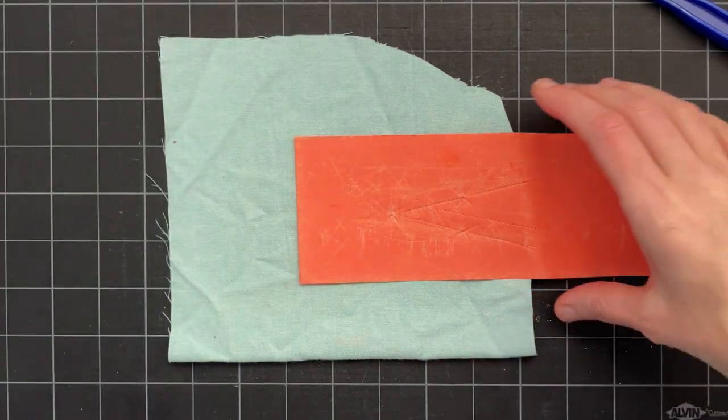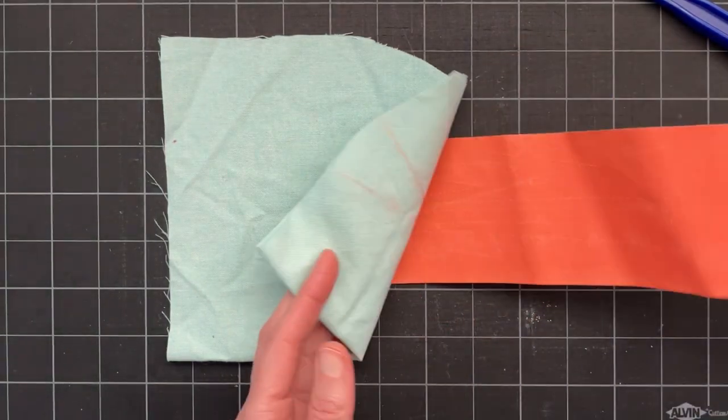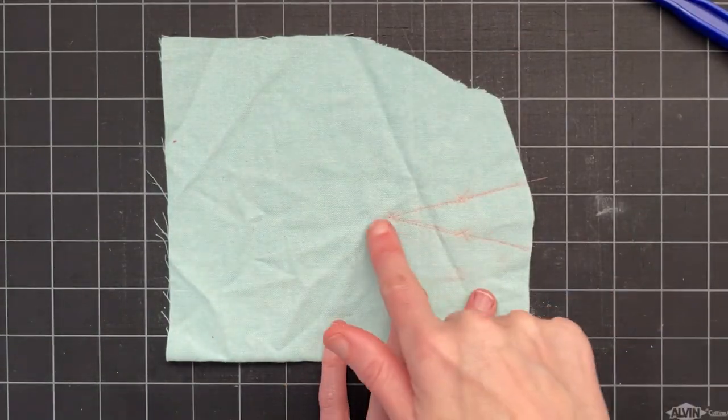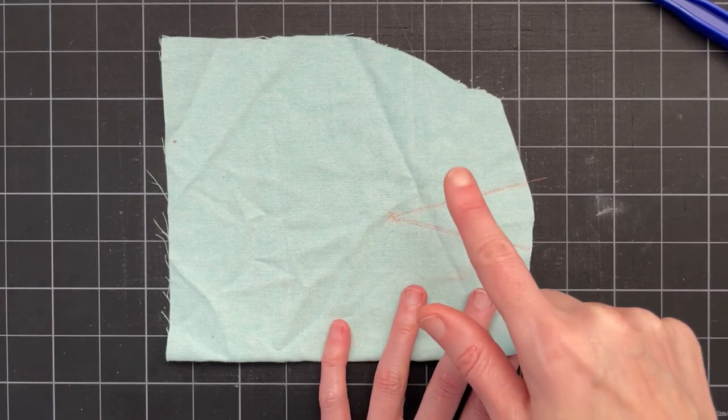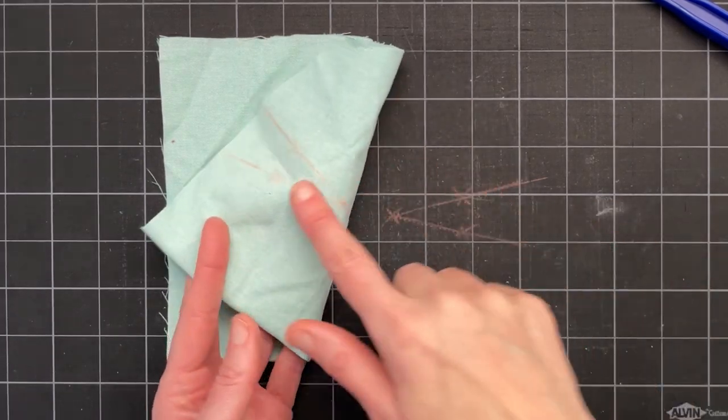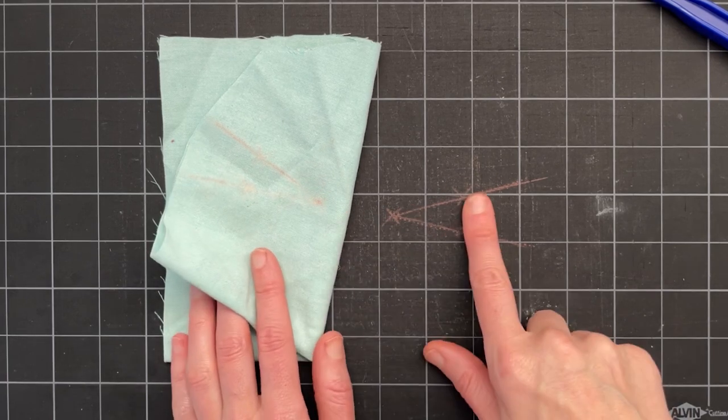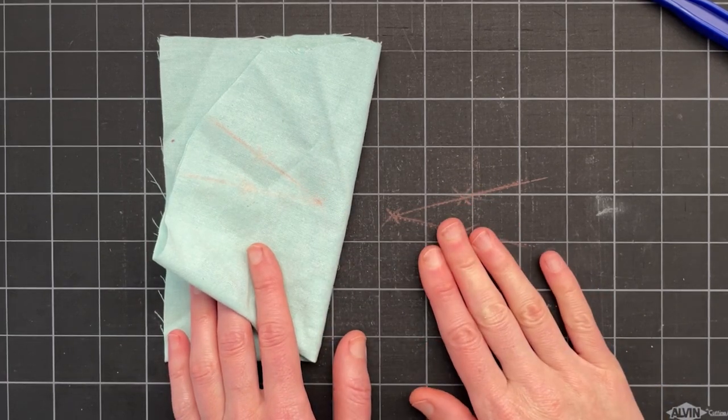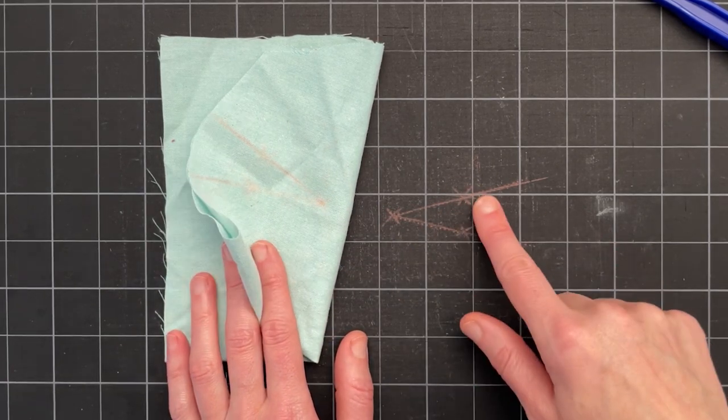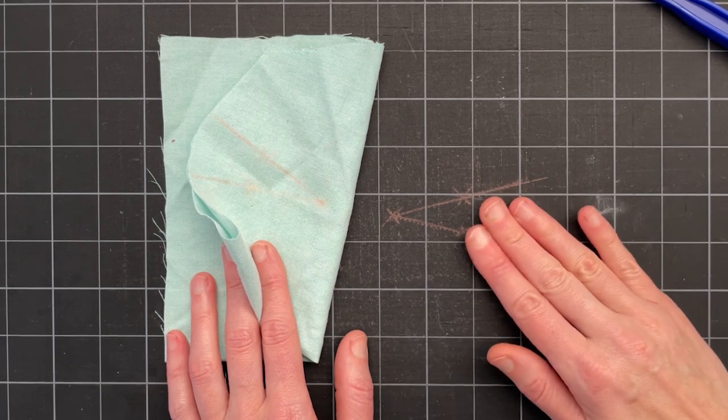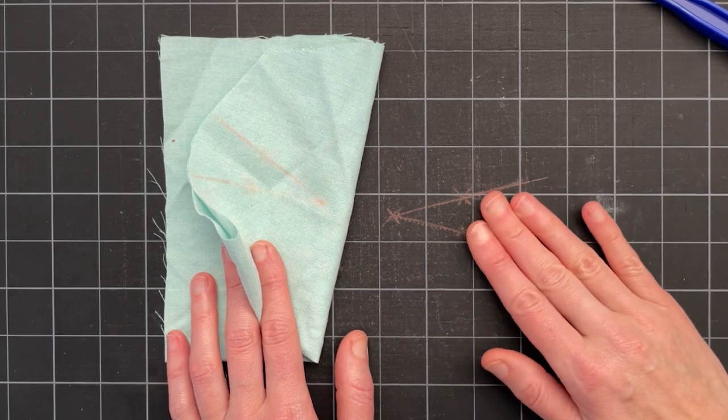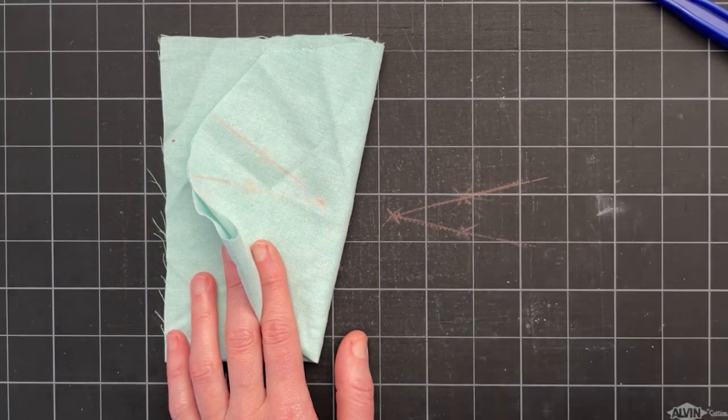Then we can lift this away. We lift our pattern away and we can see we have a marking on this side of our fabric and on this side. We also have a marking on our surface so you want to make sure that you do this process on a surface that you can wash and that won't get damaged like a cutting mat.